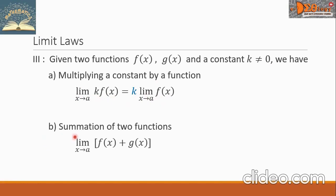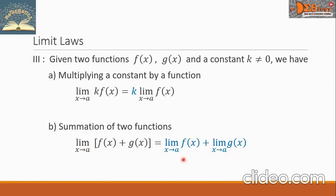Letter B — summation of two functions. The form is the limit as x approaches A of f of x plus g of x. To simplify this, we take the limit of each function and then add the limits. So we have the limit of f of x as x approaches A, plus the limit of g of x as x approaches A.